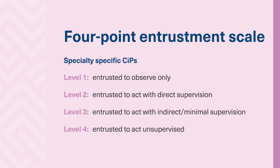For the specialty CIPs, Level 1 describes a trainee that is entrusted to observe only, with no provision of direct clinical care. Level 2, a trainee would be entrusted to perform tasks with direct supervision — for IR procedures, the supervising doctor is present in the operating theatre. Level 3, a trainee is entrusted to act with indirect or minimal supervision; the supervisor may not be present at the site of patient care but is immediately available and can attend to provide direct supervision if necessary — for IR procedures, the supervising doctor is on hand in the department. Level 4, a trainee is entrusted to act unsupervised and at a level equivalent to a consultant.